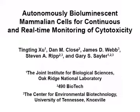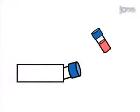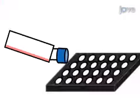The overall goal of this procedure is to use autonomously bioluminescent human cells for continuous and real-time cytotoxicity monitoring. This is accomplished by first obtaining a sufficient number of actively growing autobioluminescent cells.